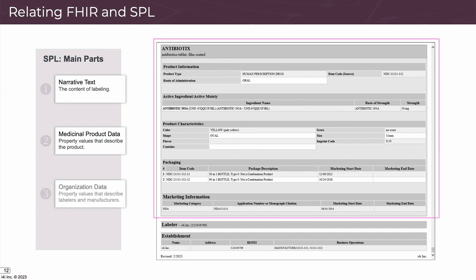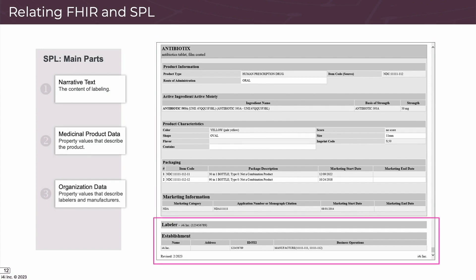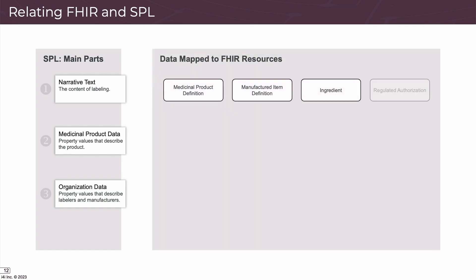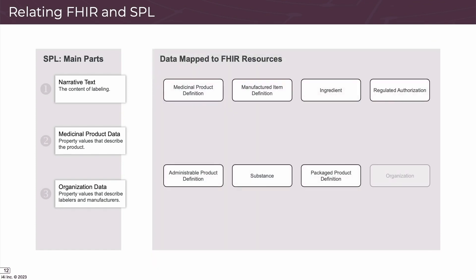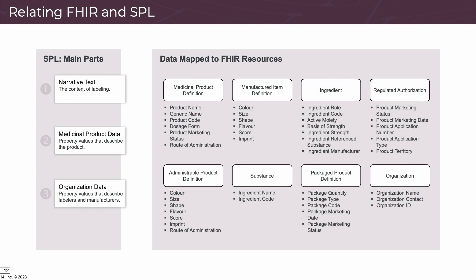This concept flows into FHIR EPI documents as well. But in the case of FHIR, medicinal product data is extrapolated into eight smaller, more discrete resources. Each of the eight FHIR resources used for EPI holds a smaller, more precise set of metadata values.